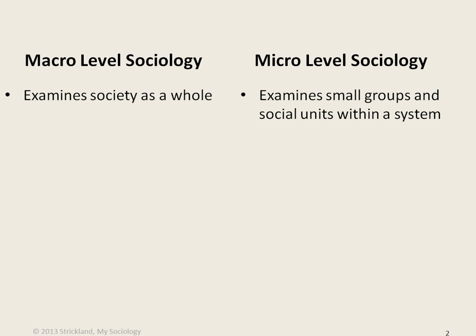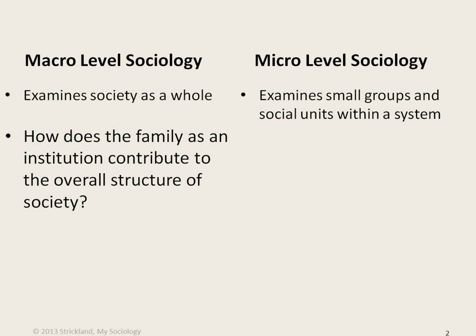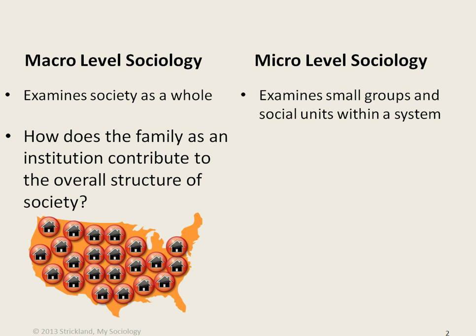At the micro level, sociology examines society in small groups and social units that exist within a larger system. For example, if a sociologist was examining the family at the macro level, they would consider issues of the family as an institution in society — not an individual family like the Jones family or the Smith family, but the family as an institution in America. A macro-level question might be: How does the family as an institution contribute to the overall structure of society?